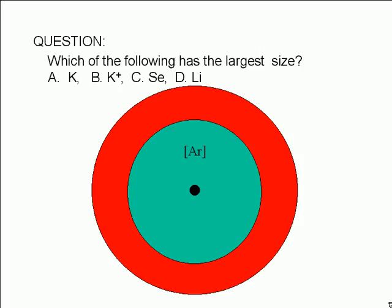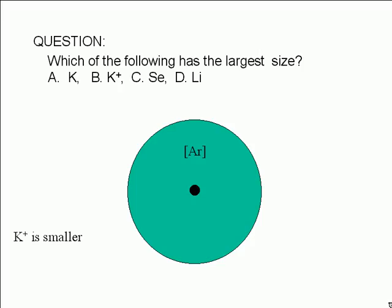In the potassium ion, the electron in the valent shell is gone. Obviously, the potassium ion is smaller than a potassium atom. Therefore, the correct answer is A.